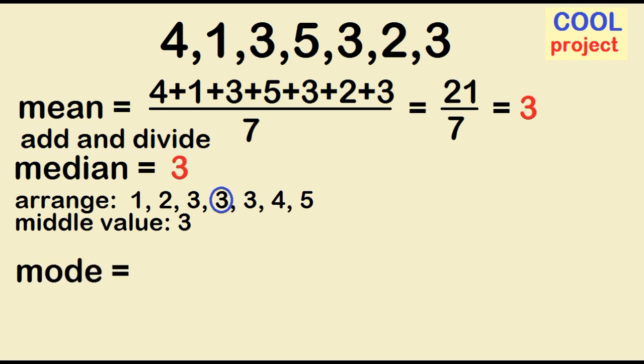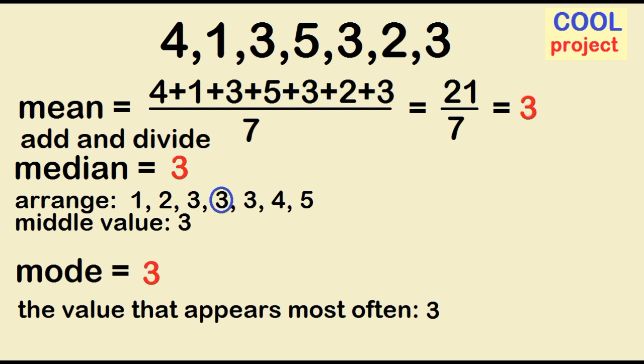Mode is the value that appears most often. 3 appears 3 times, so the mode is 3. Remember that the number of data values is odd. What if it is even?